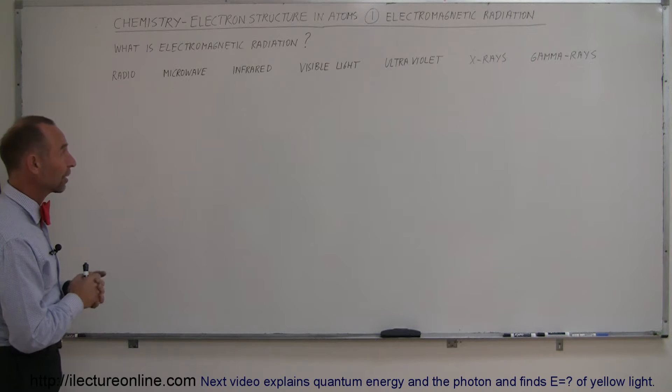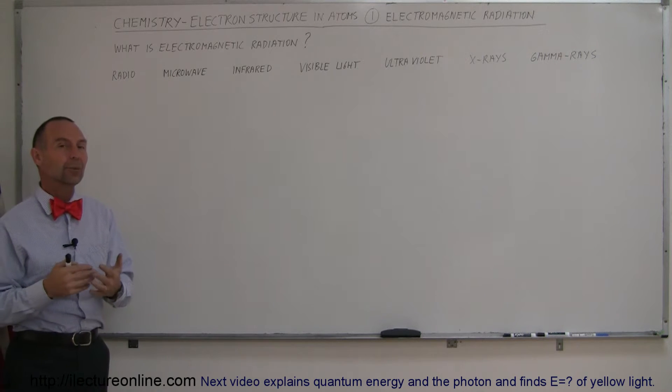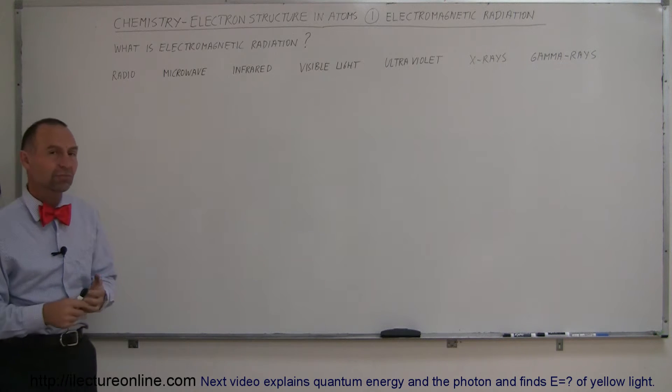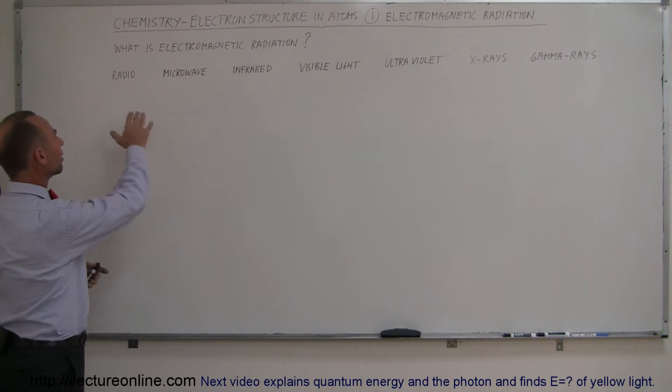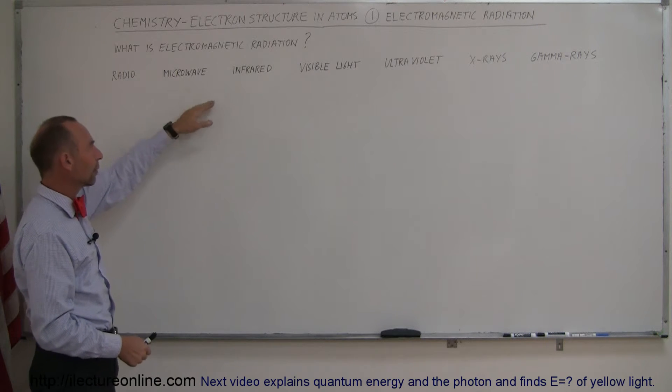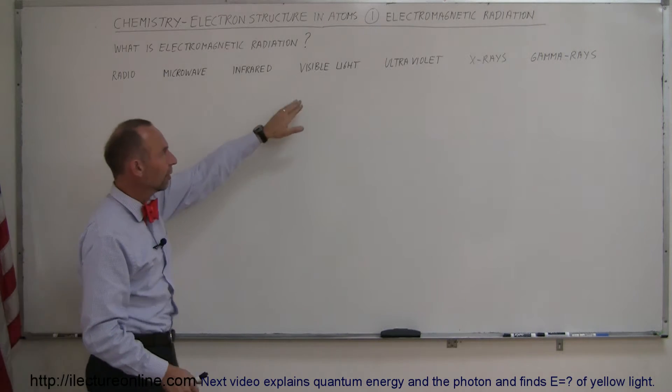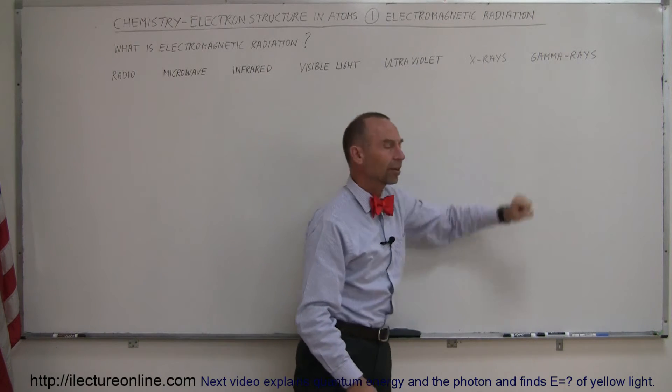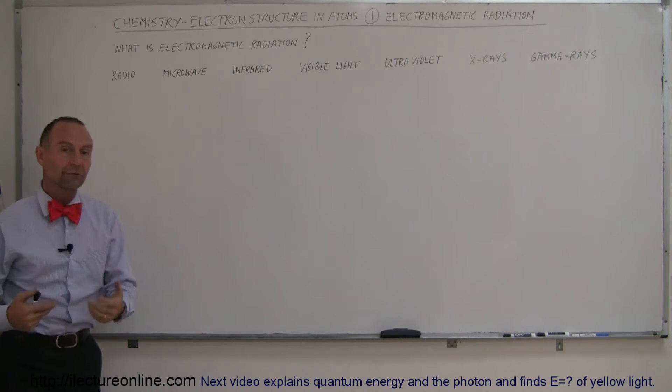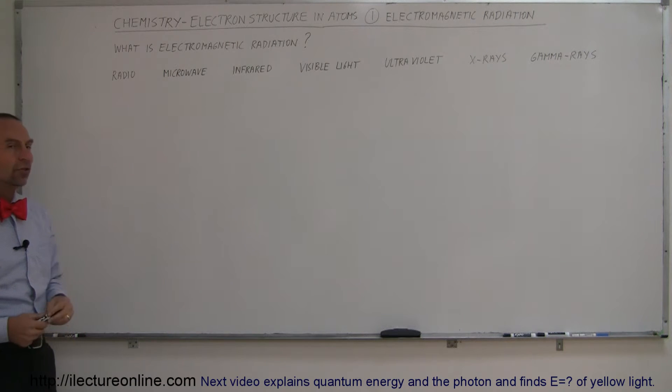The first thing we're going to do is try to figure out what electromagnetic radiation is. If someone came up to you and says what is electromagnetic radiation, right away you probably would start thinking along these lines and say oh I know what that is. That's radio waves and microwaves and infrared radiation, visible light, ultraviolet radiation, x-rays and gamma rays, and yes you would be correct. Those are different forms of electromagnetic radiation but it doesn't really answer the question.